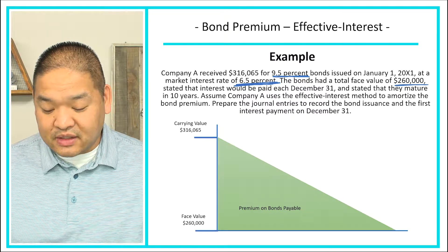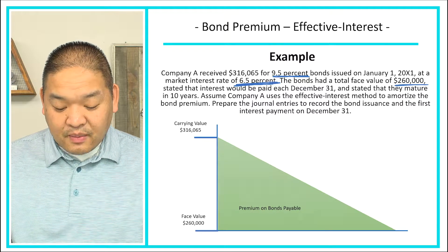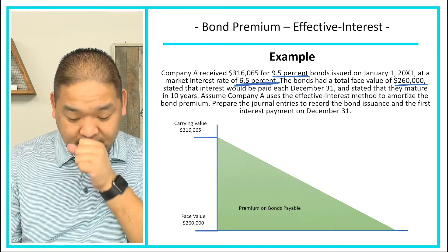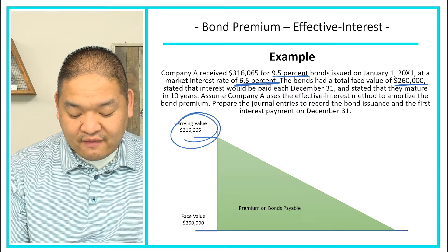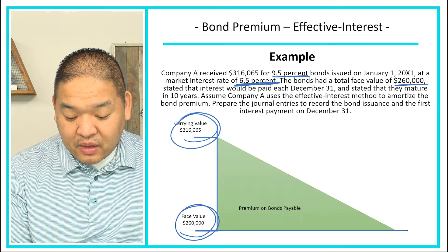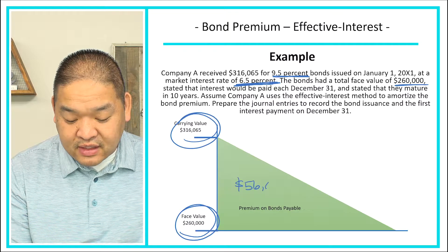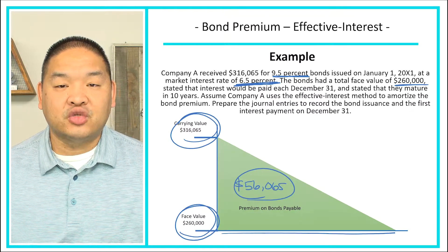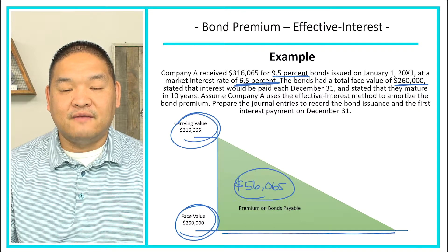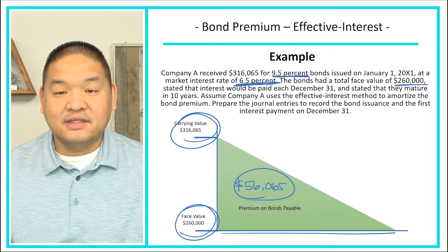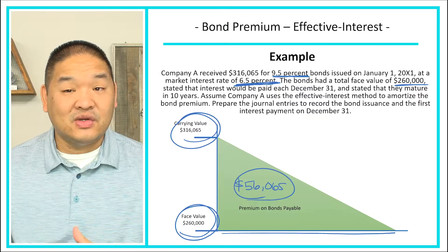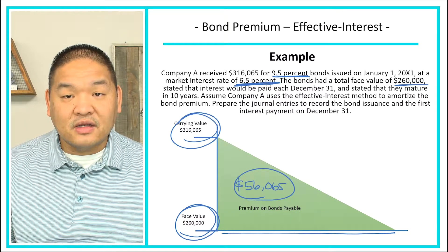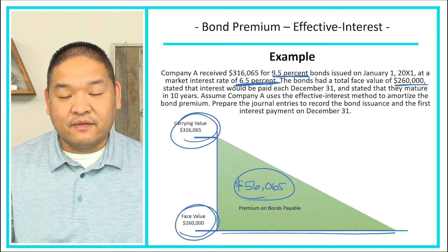Company A uses the effective interest method to amortize the bond premium, and we need to prepare journal entries to record the bond issuance and the first interest payment on December 31st. The carrying value is $316,065 and the face value is $260,000, so the premium is $56,065. We need to allocate this over time, but we can't just divide by 10 to get $5,606.50 — we've got to use the effective interest method because this is a 10-year bond at 6.5%, and there is a big difference there.